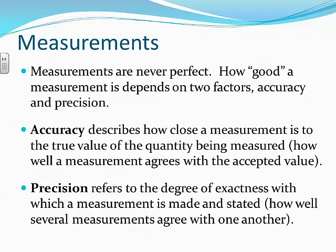Measurements are never perfect. How good a measurement is depends on two factors: accuracy and precision. A lot of people use these two terms interchangeably, but they're not the same. You need to understand the scientific definitions of accuracy and precision. Accuracy describes how close a measurement is to the true value — in other words, how well a measurement agrees with the accepted value.